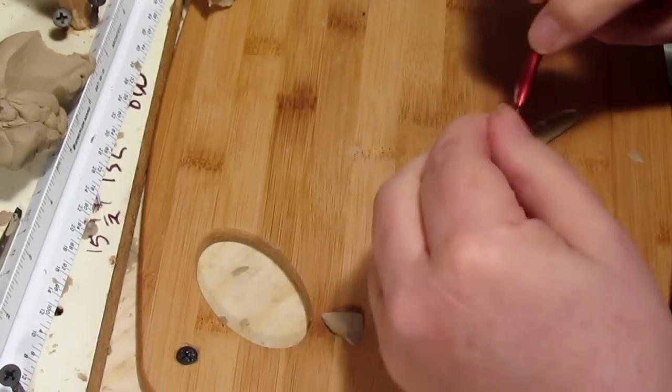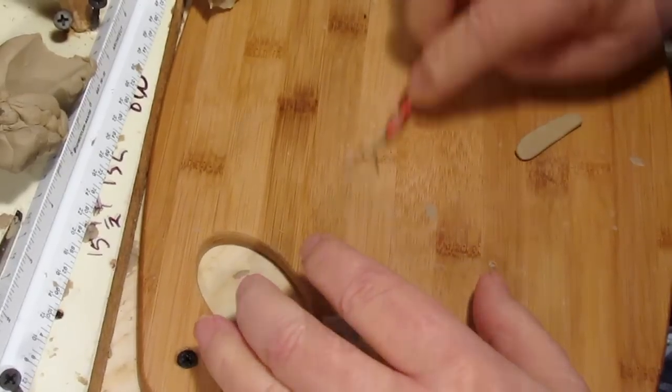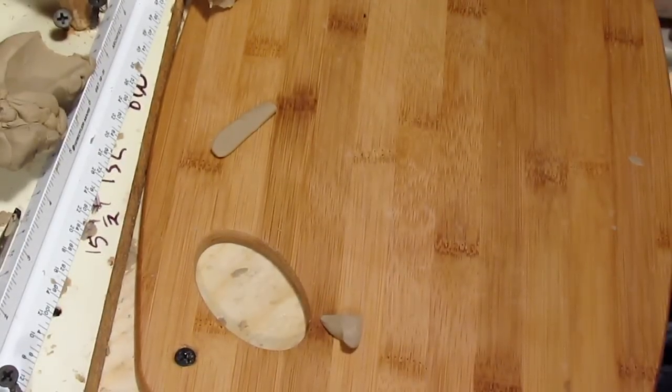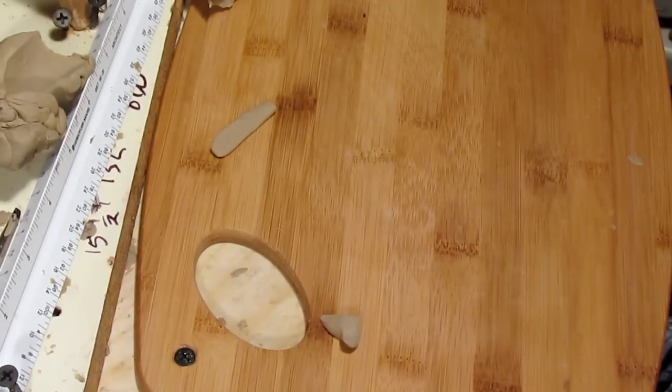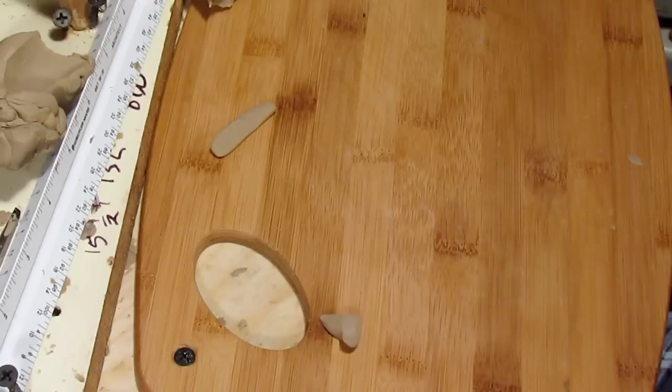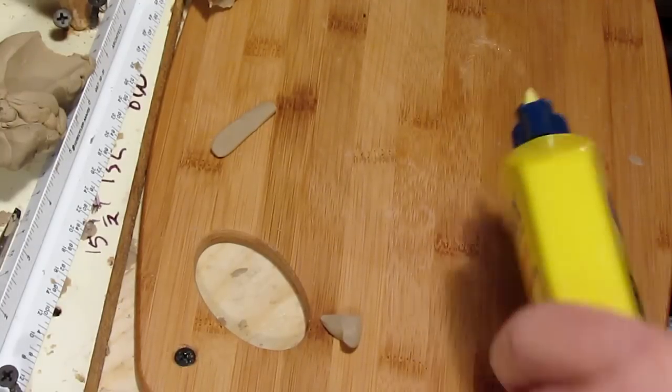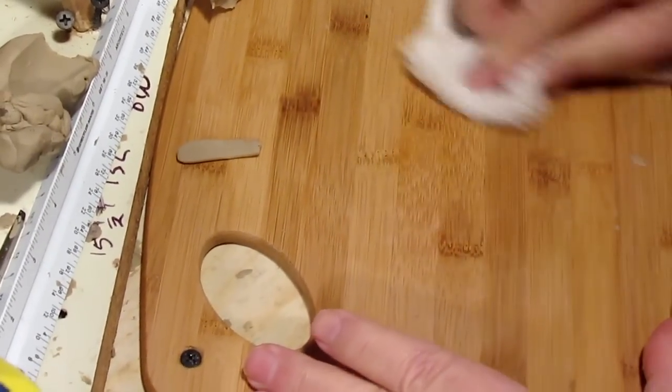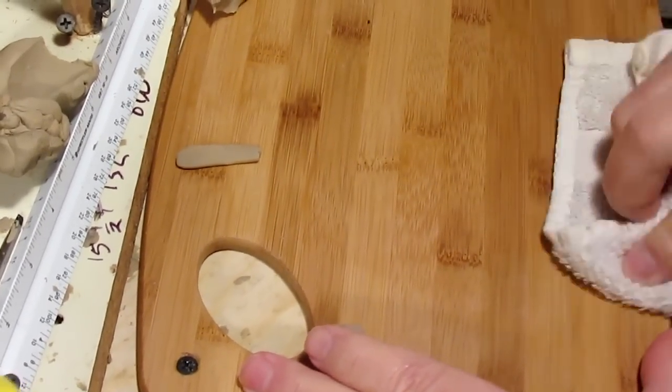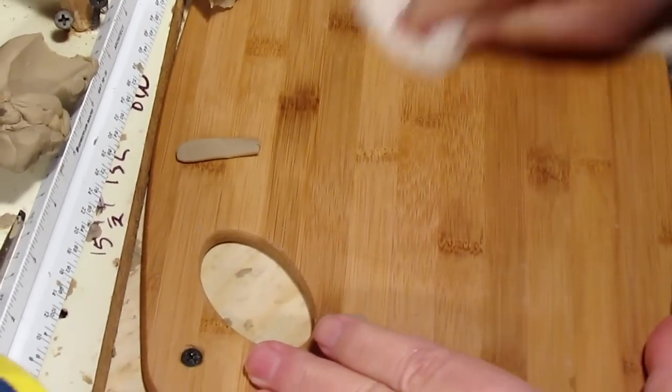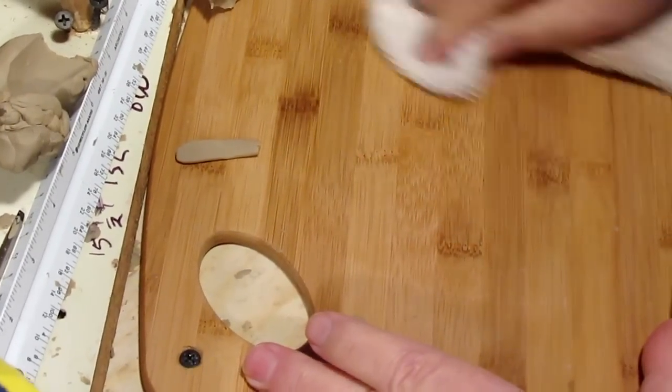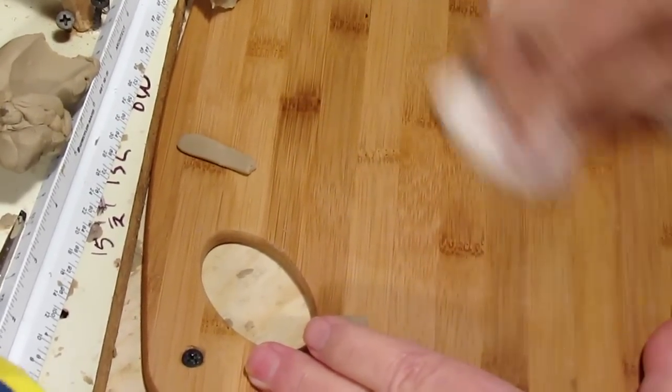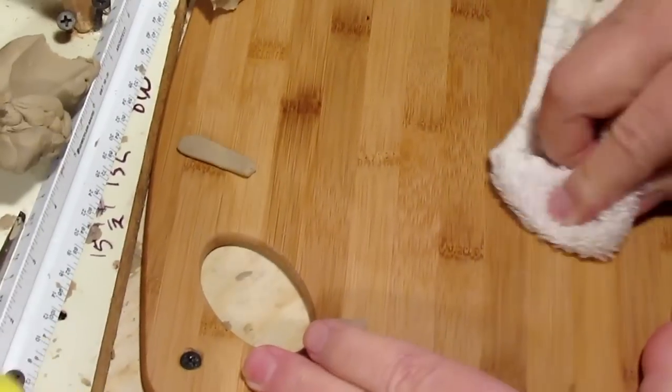I'll use a little lighter fluid and just clean off the board a little bit because it tends to get a little sticky after a while with all the clay that you roll on it. The lighter fluid gives a little bit of an oily surface so that the clay has less of a tendency to stick to it.